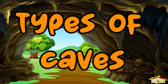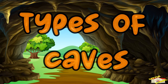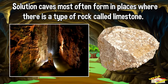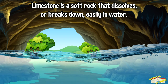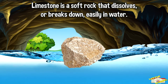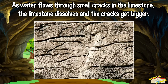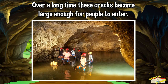Let's go over the types of caves. Most caves are called solution caves. Solution caves most often form in places where there is a type of rock called limestone. Limestone is a soft rock that dissolves, or breaks down easily, in water. As water flows through small cracks in the limestone, the limestone dissolves and the cracks get bigger.